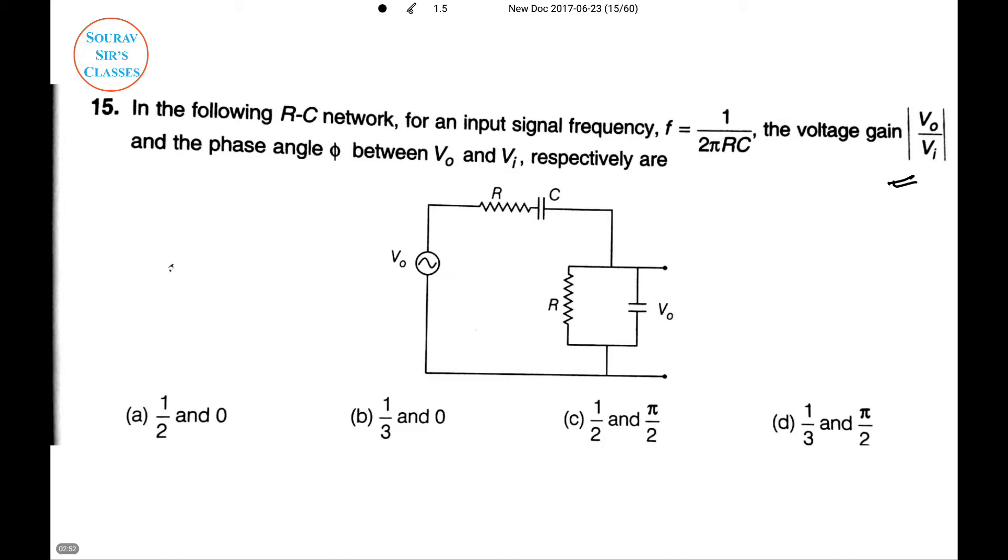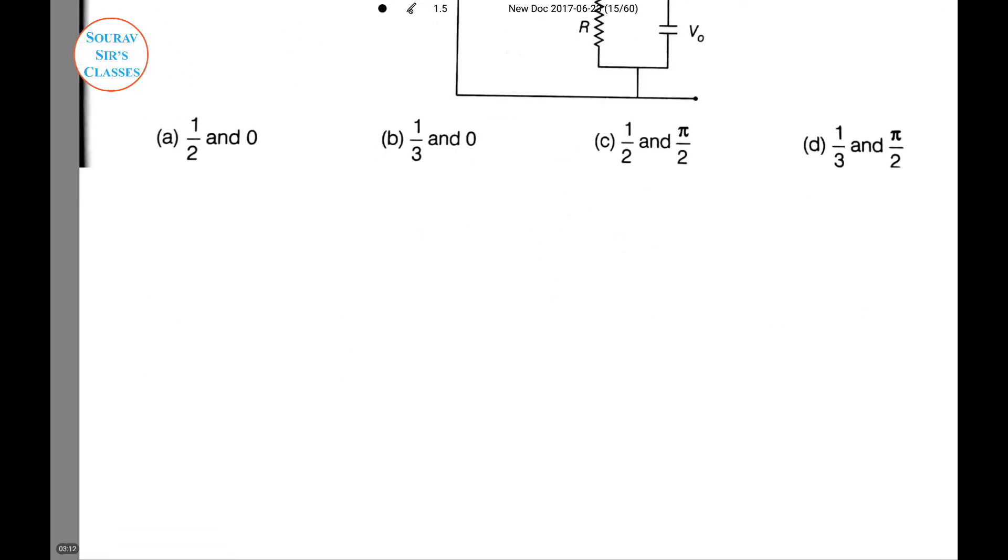We need to find V0/Vi, the voltage gain. For this, we have F = 1/(2πRC), so ω = 2πF = 1/(RC).